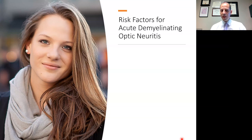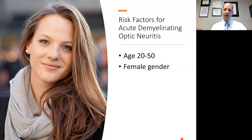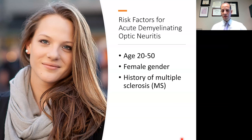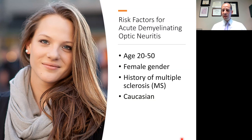What are some of the risk factors for acute demyelinating optic neuritis? It includes young age — in fact, optic neuritis is the most common acute optic neuropathy in young adults. Female gender is also a predilection, and this depends on race. In certain European cohorts the ratio of women to men may be as high as three to one, whereas in Japanese cohorts it may be more like 1.2 to one. A history of multiple sclerosis is a risk factor, as is Caucasian race. Higher geographic latitudes are also more often associated with optic neuritis.